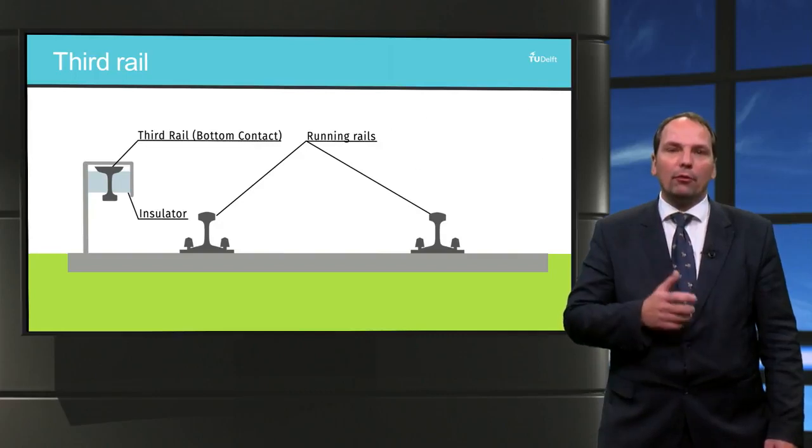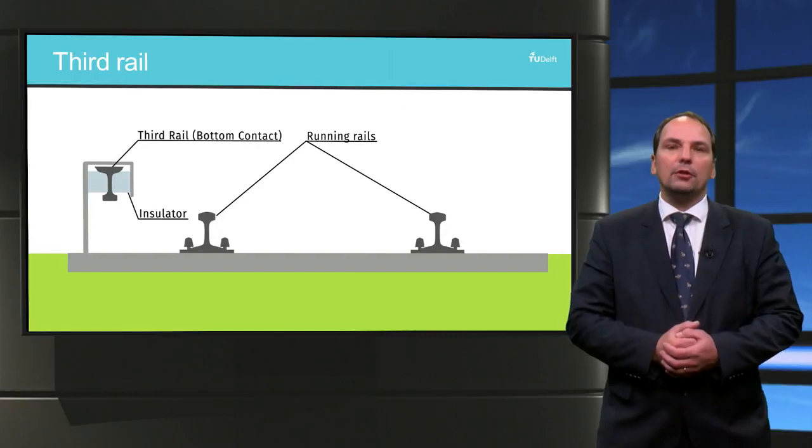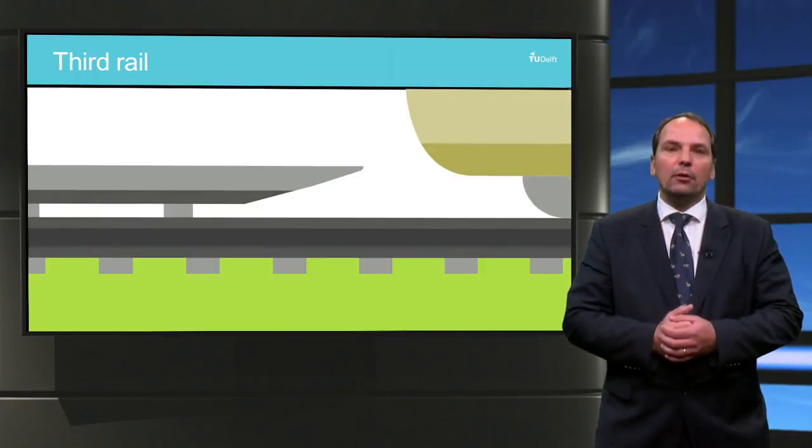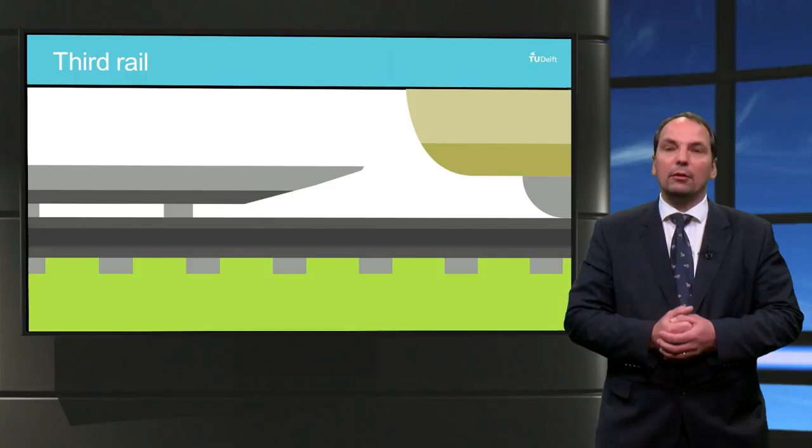The end ramps of conductor rails, where they are interrupted or change sides, present a practical limitation on speed due to the mechanical impact of the shoe. Therefore, 160 kilometers per hour is considered to be the upper limit of practical third rail operation.